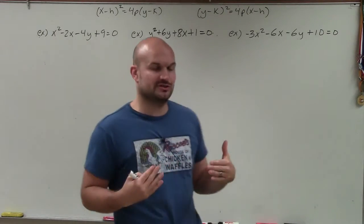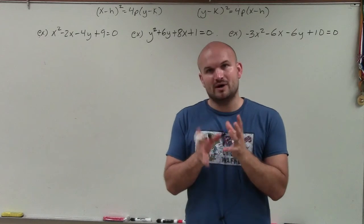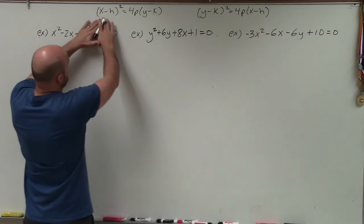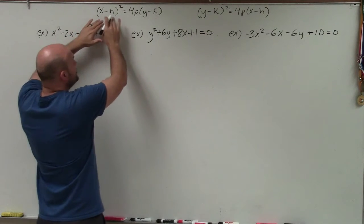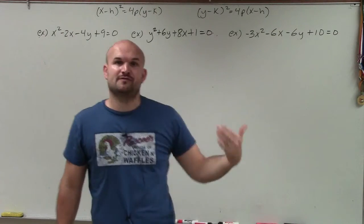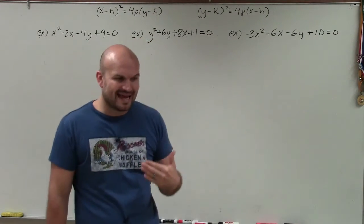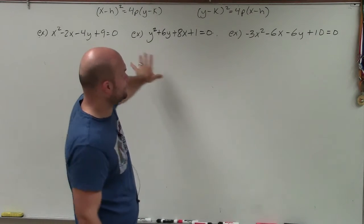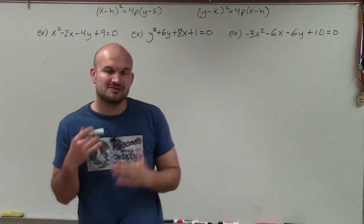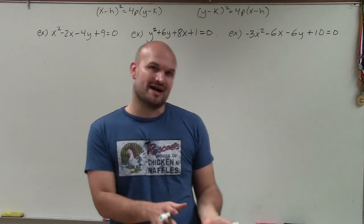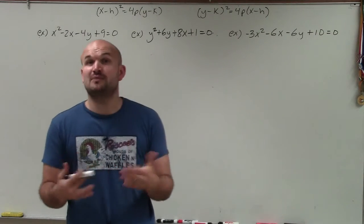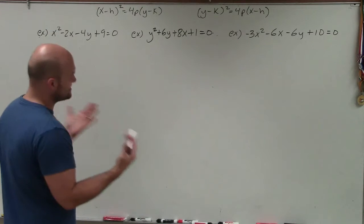To understand how we'll do that, we need to look at what makes the conic section form special — and that's the squared term. You can see this is a binomial squared, and we get binomial squares from perfect square trinomials. Right now we don't have any perfect square trinomials, but what we're going to do is create one. That process of creating a perfect square trinomial is called completing the square.